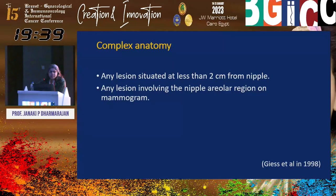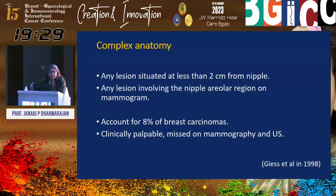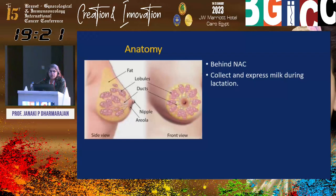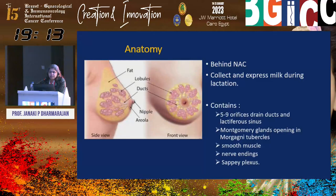Any lesion situated at less than two centimeters from the nipple, or any lesion involving the nipple areolar region on mammography, is termed as a retroareolar lesion. It accounts for 8% of breast carcinomas. It is clinically palpable and may be missed on mammography and ultrasound. Located behind the nipple areolar complex, it mainly deals with collection and expression of milk during lactation. It contains approximately 5 to 9 orifices that drain the ducts and lactiferous sinuses, the Montgomery glands that open in the morgagny tubercles. It consists of smooth muscles, nerve endings, and sapiens plexus.